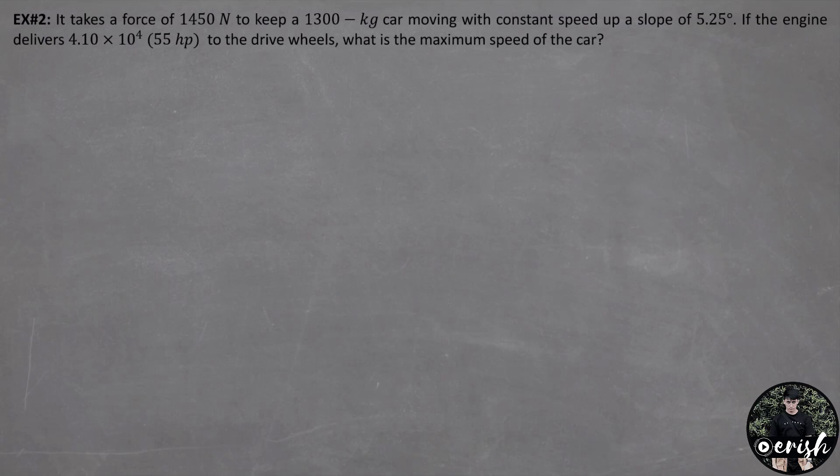In this problem, we are asked to find the speed using the power relationship P equals force times velocity. So we just have to substitute the given quantities and solve for the velocity after deriving the equation. We divide both sides by force. Cancel this.